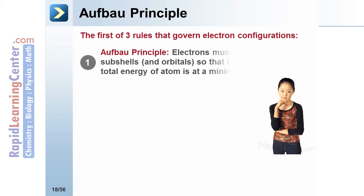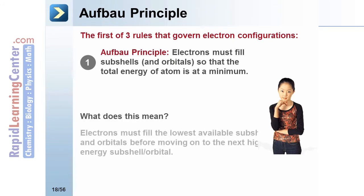The first of the three rules is the Aufbau Principle. It states that electrons must fill subshells and orbitals so the total energy of the atom is at minimum. This means electrons must fill the lowest possible subshell or orbital before moving on to the next higher energy subshell or orbital.